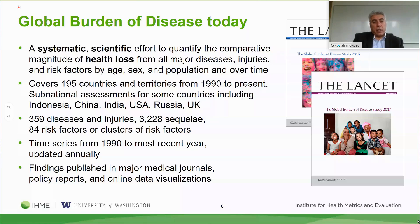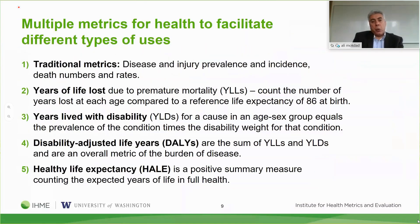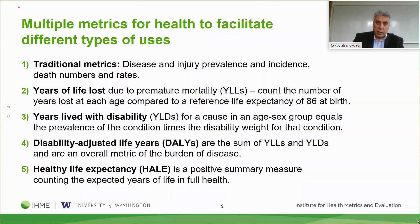The Global Burden of Disease covers 359 diseases, injuries, and their sequelae—for example, diabetes amputation and diabetes blindness—and 84 risk factors. In addition to traditional epidemiological metrics like prevalence, incidence, and death rates, we have three new indicators. The first is Years of Life Lost, where we take the highest life expectancy in the world—a Japanese woman at 86.9—so somebody dying in DC at age 60 has lost 26.9 years. This measure indicates not only mortality but how early deaths are occurring, which is a good indicator of premature mortality.